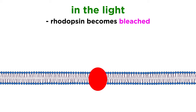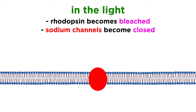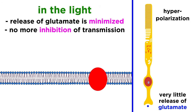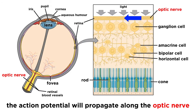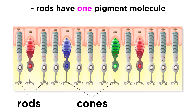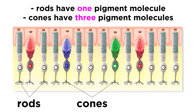When exposed to light, rhodopsin becomes bleached, initiating a cascade of effects that results in the closure of the sodium channels. The rod becomes hyperpolarized, and the release of glutamate is minimized, so the inhibition of signal transmission ceases. The bipolar cell can now depolarize and release neurotransmitters towards the ganglion cell, which will generate an action potential that can propagate along the optic nerve. We should note that rods contain just this one pigment — rhodopsin — while cones contain three, which can act together in varying ways to allow for the perception of any color in the visible spectrum.